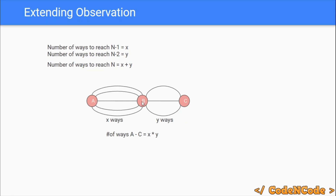Now applying this here: from zero to n-1 there are x ways. From n-1 to n there is only one way — you take a jump of length one. So in total there are x times one, that is x ways to reach n via stair n-1. The same argument applies for n-2 to n: there are y ways from zero to n-2, and one way from n-2 to n by taking a step of length two. So the total is y times one, that is y ways. Combined, there are x+y ways to reach stair n from zero.